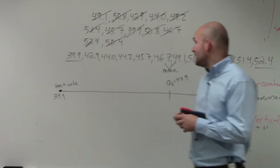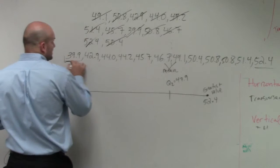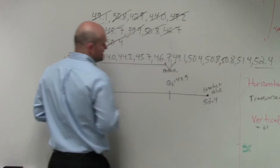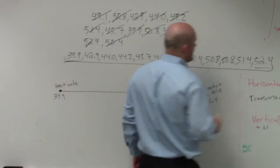Okay, so now the next set is we need to find quartile 1 and quartile 3. So quartile 1 is basically going to be the median of our lower set, and quartile 3 is going to be the median of our upper set.